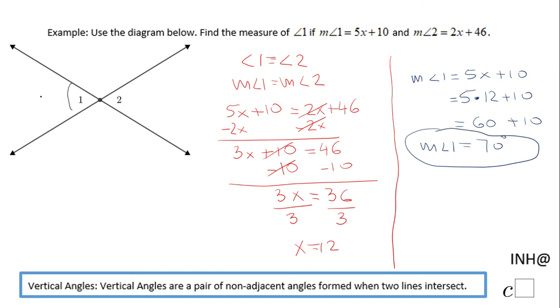This angle is going to be 70 degrees. This angle also will be 70 degrees. Remember these two angles are congruent and you can use substitution and find this angle in case you need it.